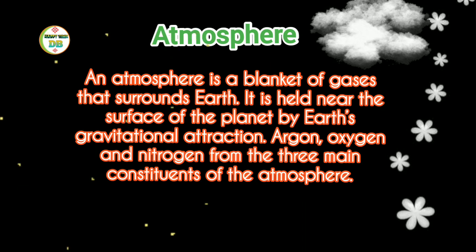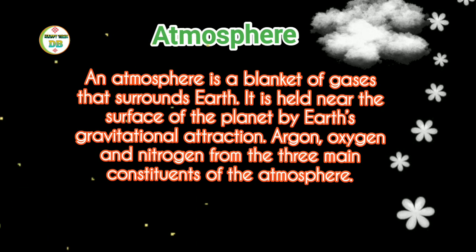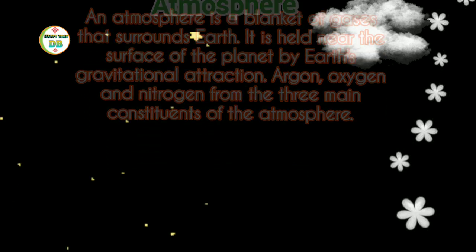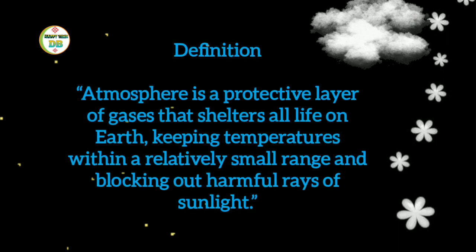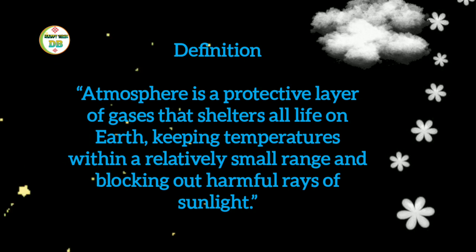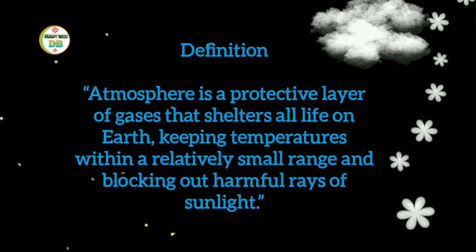The atmosphere is held near the surface of the planet by Earth's gravitational attraction. Argon, oxygen, and nitrogen are the three main constituents of the atmosphere. It is a protective layer of gases that shelters all life on Earth, keeping temperatures within a relatively small range and blocking out harmful rays of sunlight.